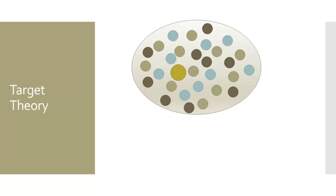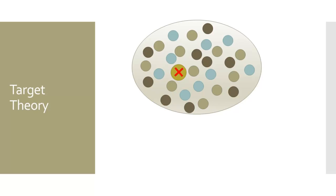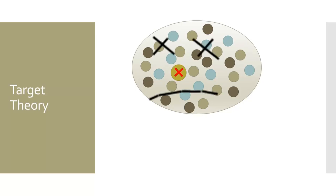We will start by looking at target theory. There are different types of molecules that make up each cell in the human body. If radiation disrupts a molecule of a cell, chances are that there are other similar molecules within the cell that have the same function. So the loss of this one molecule would not be detrimental to normal cell function, and the cell can survive. However, some molecules in the cell are more essential to the cell's function, and if radiation interferes with that molecule and there weren't others to perform the function, the cell would not be viable. A direct hit to an essential molecule is likely to cause cell death.